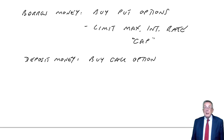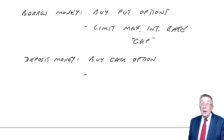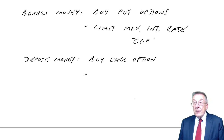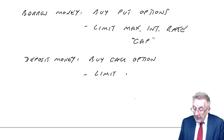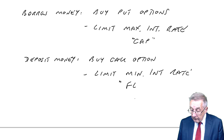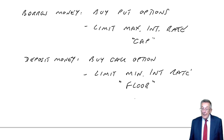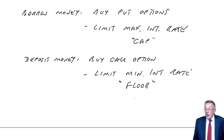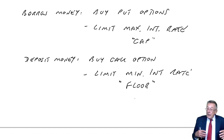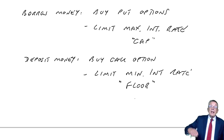Without going through all the arithmetic, it works in the reverse way. By buying call options on futures, a depositor — who is worried about interest rates falling — would limit the minimum interest rate. We call that a floor. If you limit the minimum interest rate, it's a floor — your feet can't go any lower. So the basic rule: borrowers buy put options and get the benefit of lower rates; depositors buy call options and limit the minimum rate but get the benefit of higher rates.